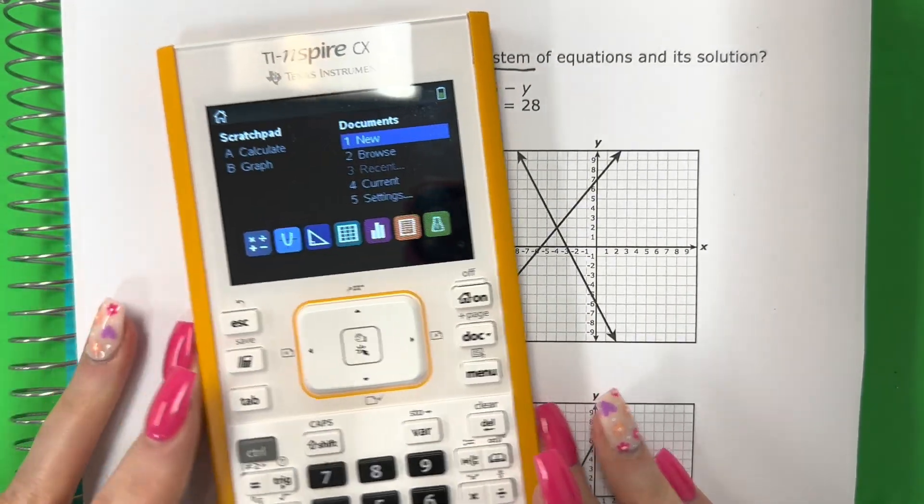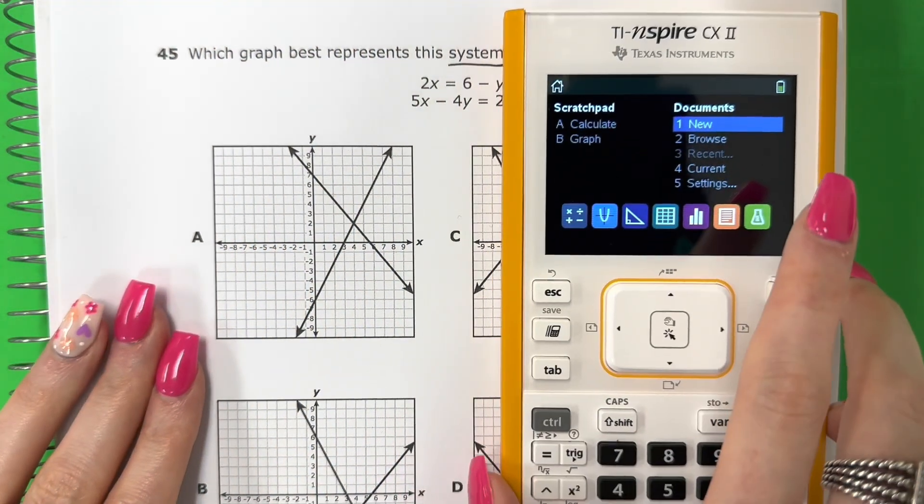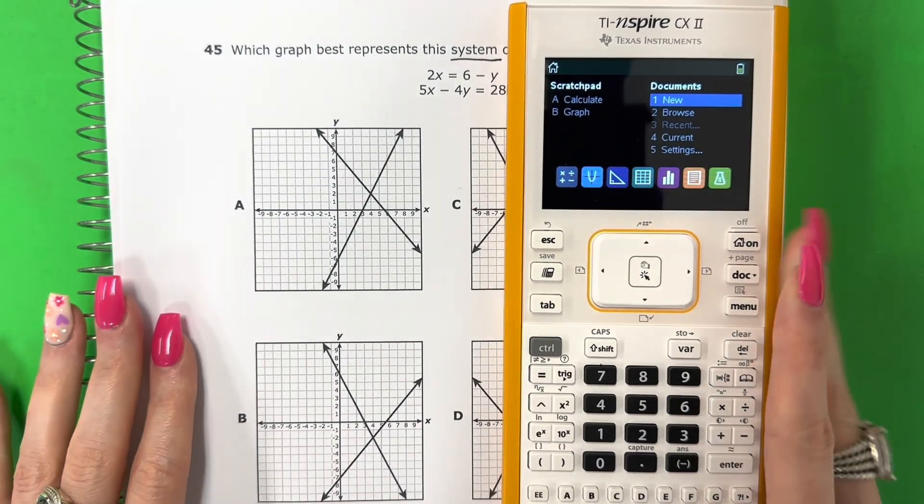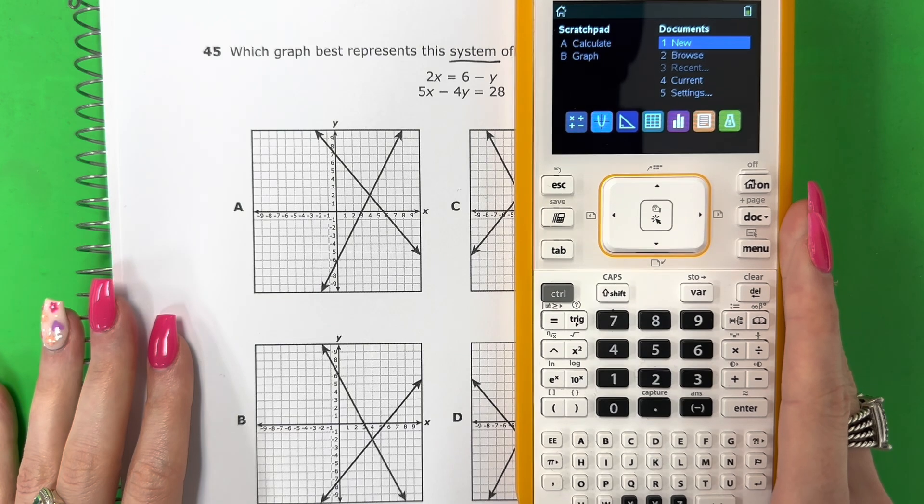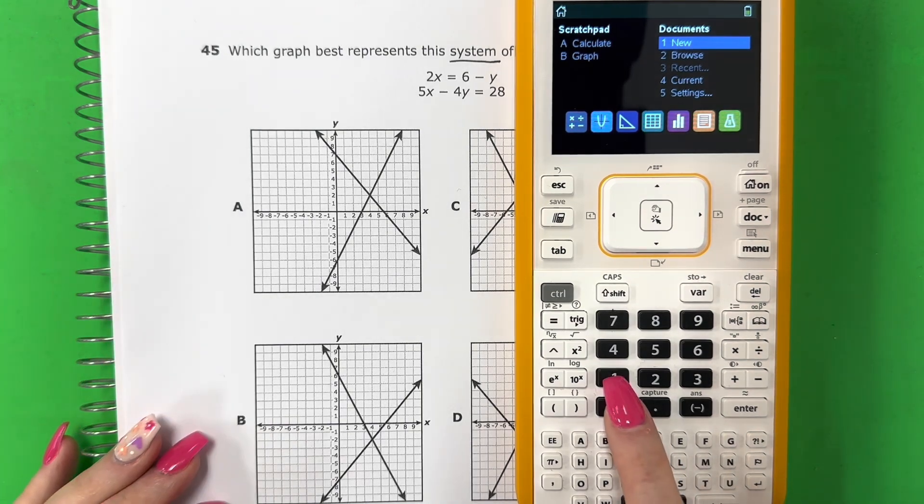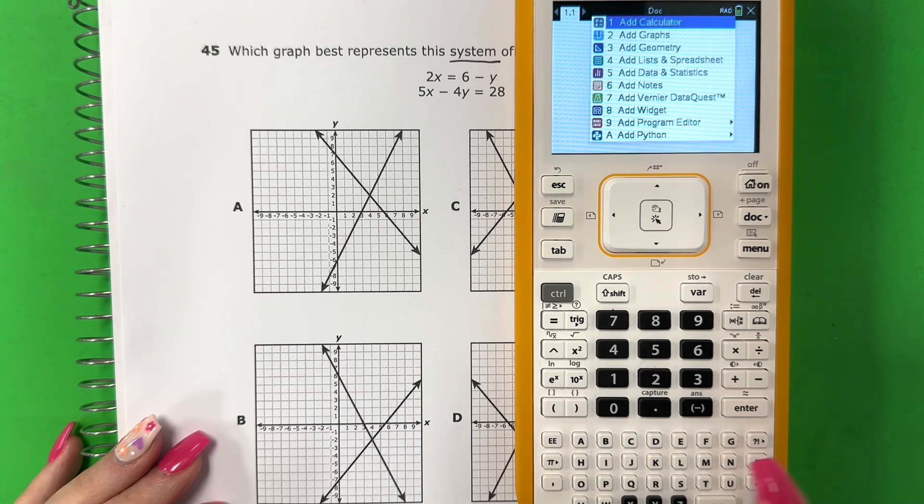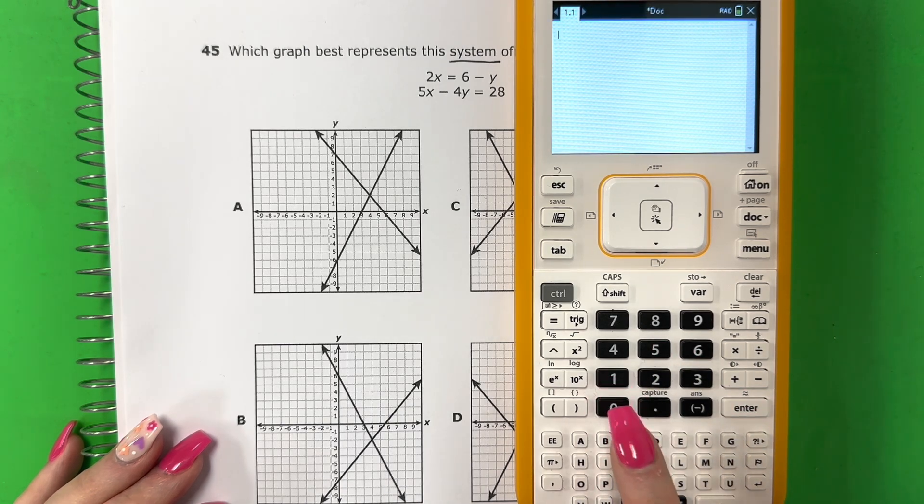So go ahead and get your TI Inspire CX and let's begin. Let me zoom out here so you can see the buttons that I push. Let's go ahead and enter into the calculator. So go ahead and push one. Then go to no. You don't want to save anything. And then go one. Uno.